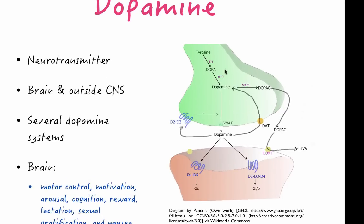Let's look at this diagram. This is the pre-synaptic neuron, this is the post-synaptic neuron, and this is the synaptic cleft. The precursor of dopamine is tyrosine, which is converted into dopa and then into dopamine. It is then kept in synaptic vesicles until neurotransmission occurs, where dopamine is released into the synaptic cleft and binds to the synaptic receptors, causing different effects. There are five receptors: D1 and D5 are classified together, and D2, D3, and D4 are classified together.